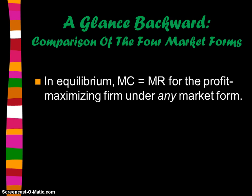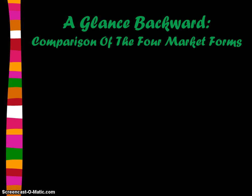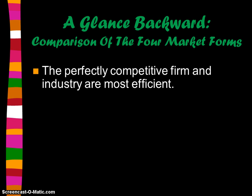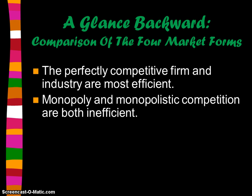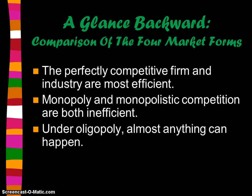In equilibrium, MR equals MC is going to be the profit-maximizing level of output for the profit-maximizing firm in any market form, including oligopoly. In oligopoly, sometimes producers have other goals more important to them than maximizing profits, but if they were just trying to maximize profits, they would also produce where MR equals MC. The perfectly competitive firm and industry are most efficient — both allocatively and productively. Monopoly is the least efficient, and monopolistic competition is also fairly inefficient, more efficient than monopoly but not as efficient as perfect competition. Under oligopoly, almost anything can happen.